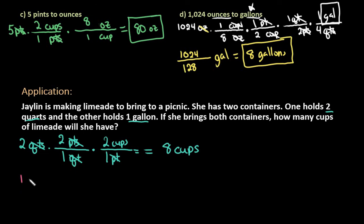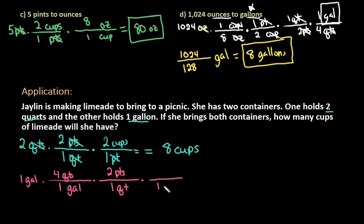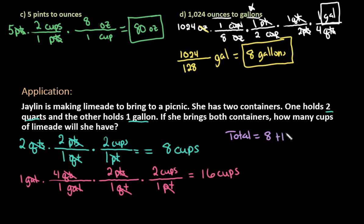Now we would look at the one gallon. One gallon is the same as four quarts; one quart is equivalent to two pints; one pint is equivalent to two cups. My gallons cancel out, quarts cancel out, pints cancel out, and I'm left with cups on the top. Multiplying across the top: 1 times 4 is 4, times 2 is 8, times 2 is 16 cups. So to find the total, I add the 8 cups plus the 16 cups, and this ends up giving me 24 cups total. So she has a total of 24 cups of limeade to bring to the picnic.